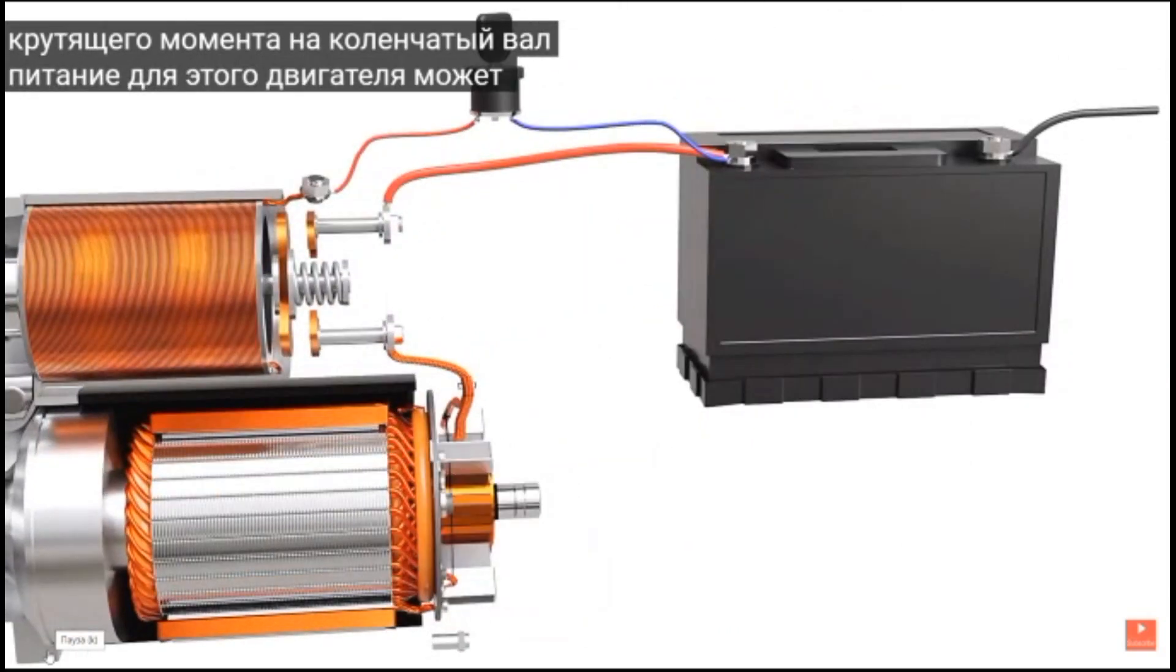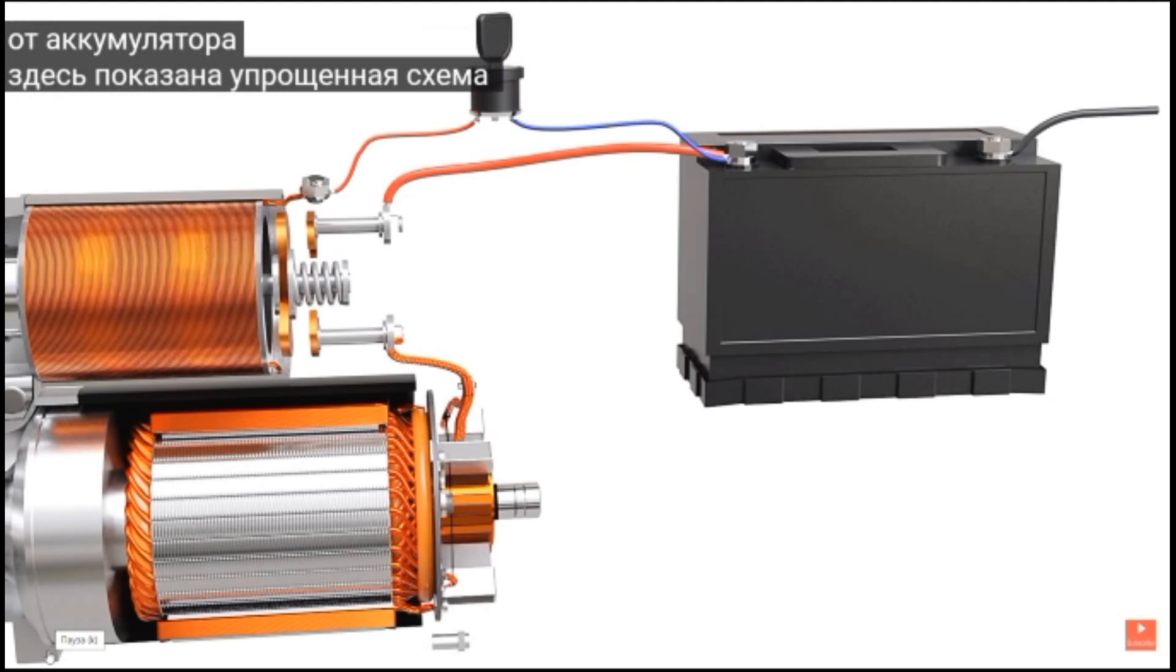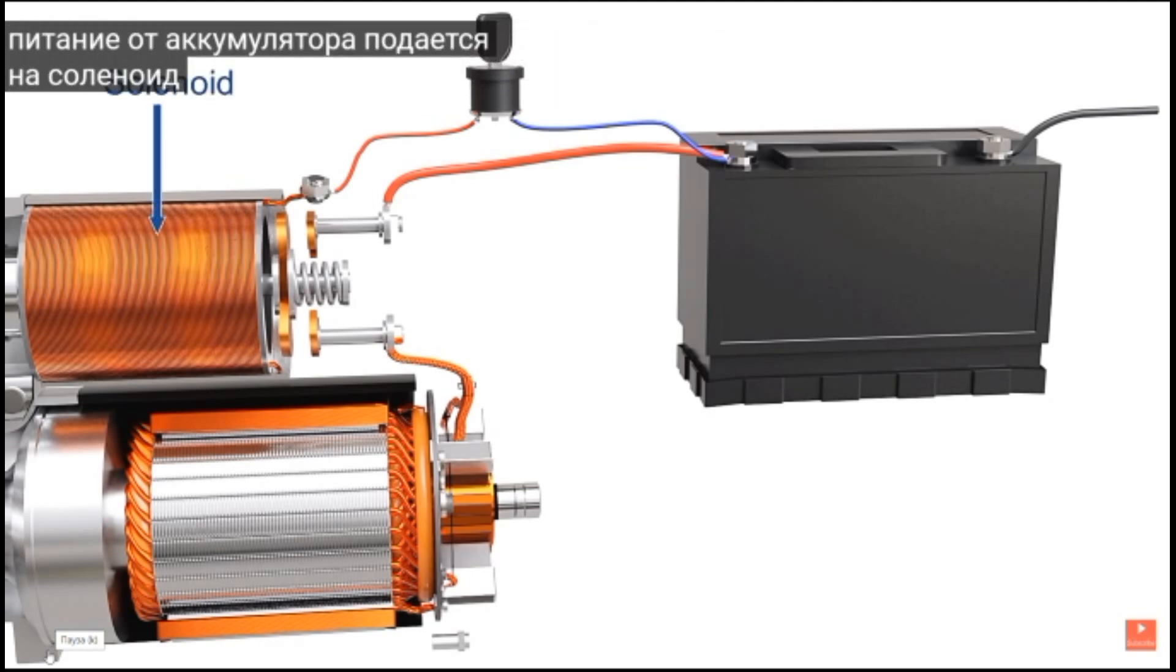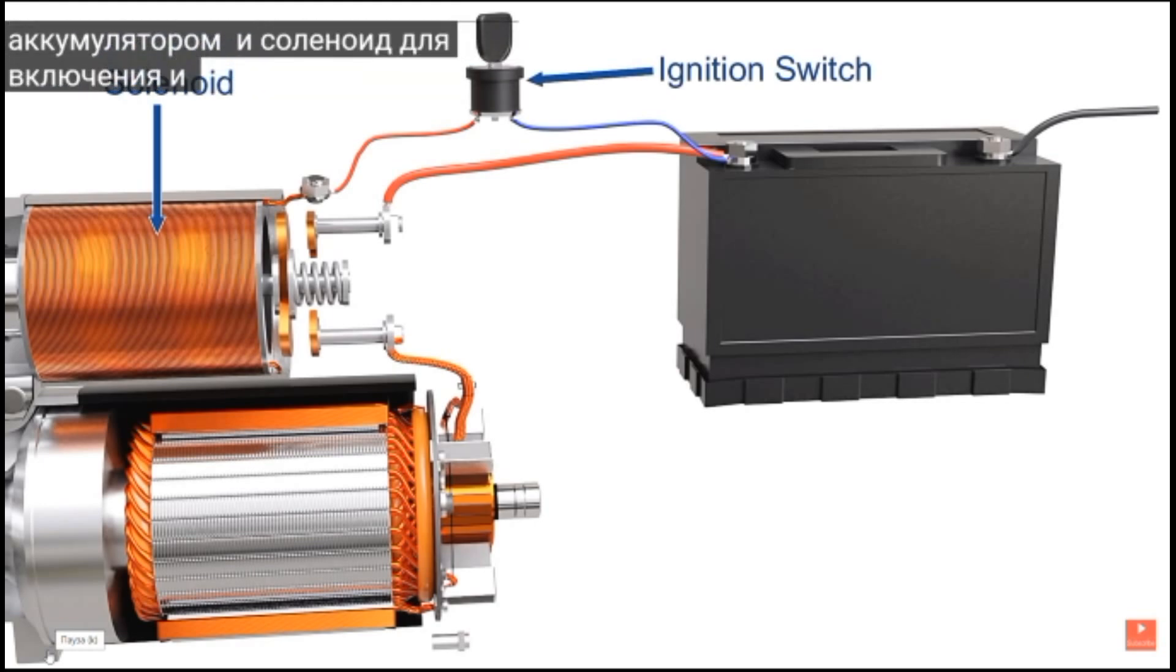The power for this motor can be drawn from the battery. A simplified circuit of power supply is shown here. The power from the battery is supplied to a solenoid. An ignition switch is installed between the battery and the solenoid to turn the power on and off.